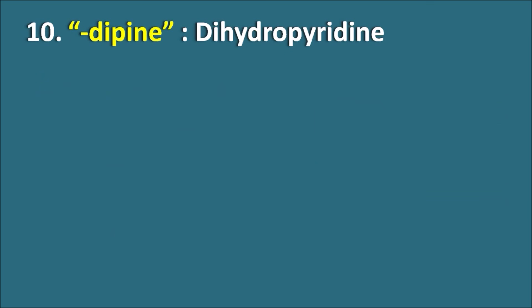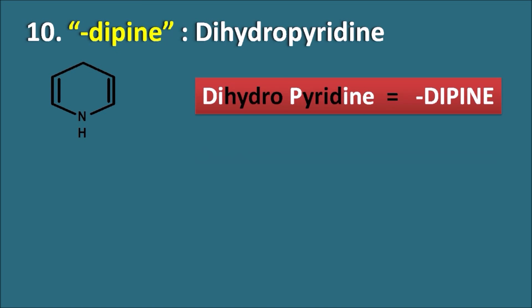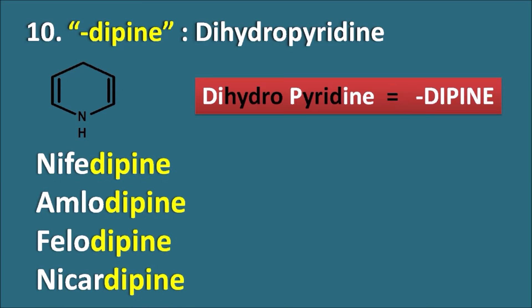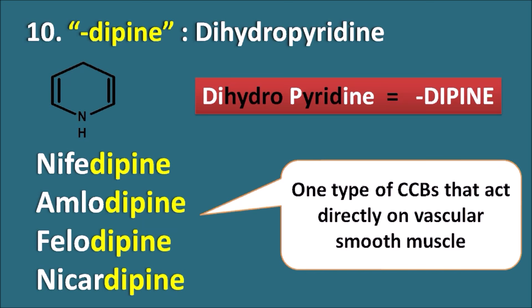Tenth, the suffix '-dipine' indicates dihydropyridines. From 'dihydro' comes 'di', and from 'pyridine' comes 'pine' — giving us '-dipine'. Drugs like Nifedipine, Amlodipine, Felodipine, and Nicardipine are all dihydropyridine derivatives. These are one type of calcium channel blockers (CCBs) that act directly on the vascular smooth muscle.